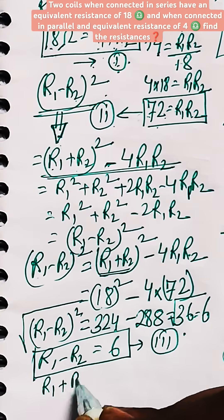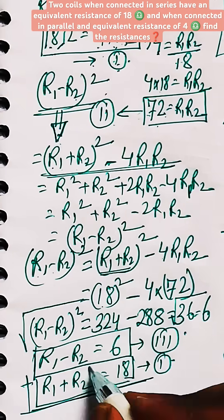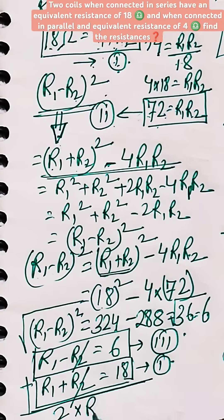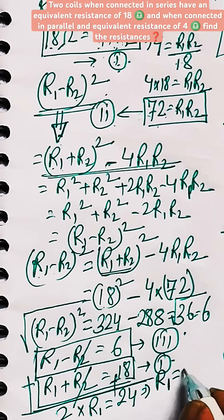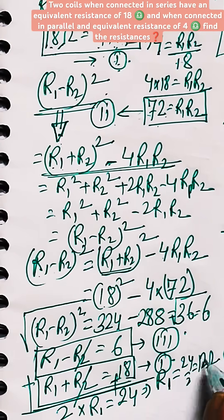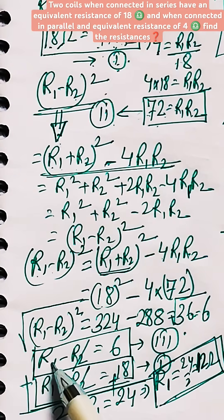Now just add equation number 1 to this. We can see R2 and minus R2 will be cancelled out, and 2 times R1 is 24. So in this way we get the value of R1 as 24 by 2, which is equal to 12 ohm.